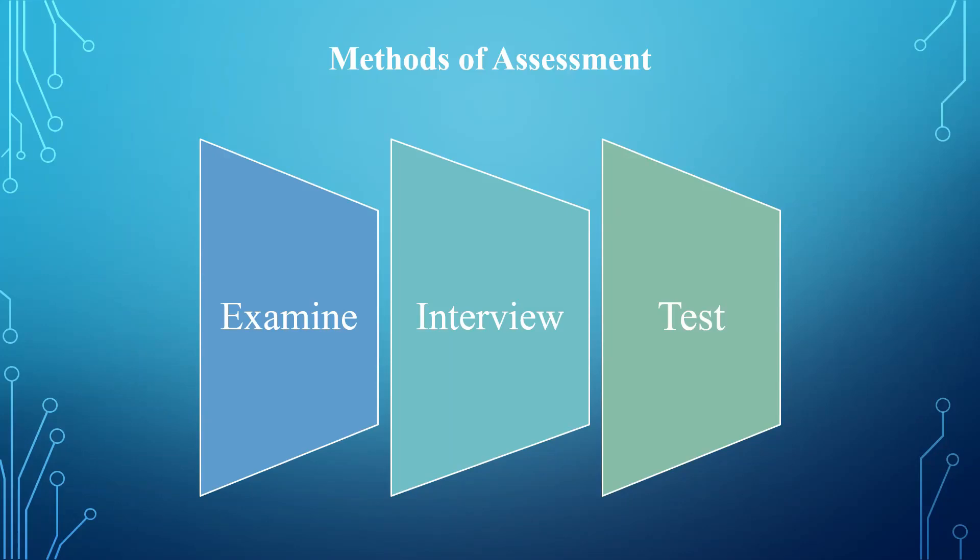There are three methods involved in conducting security control assessment. The first method is the examine method. At the examine method, you check for the operation of IT mechanisms, inspect physical security measures, review security policies and plans, and study technical manuals and guides.